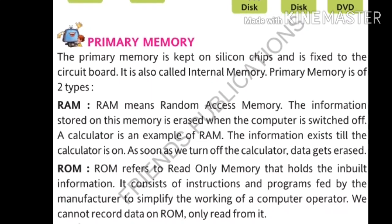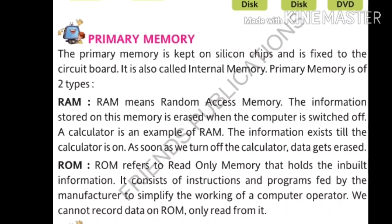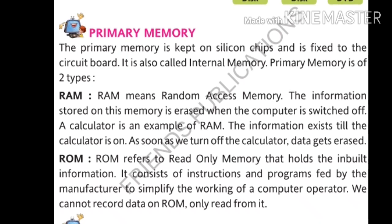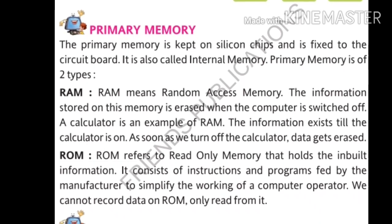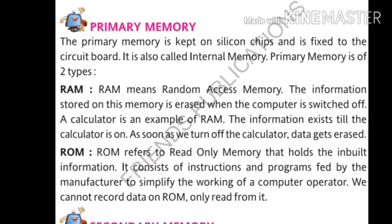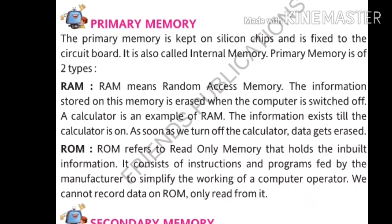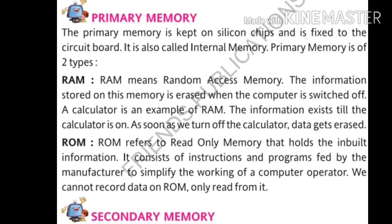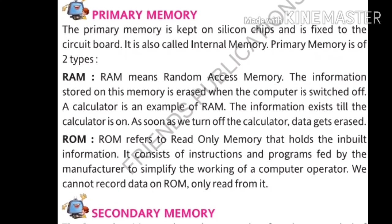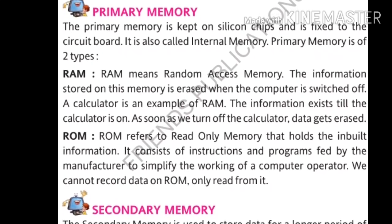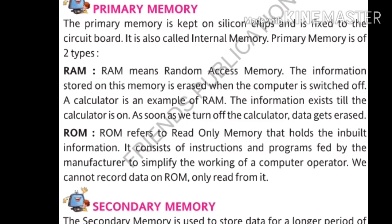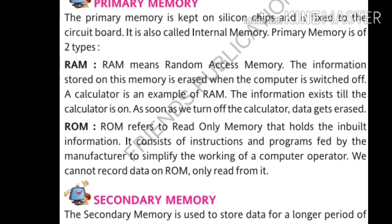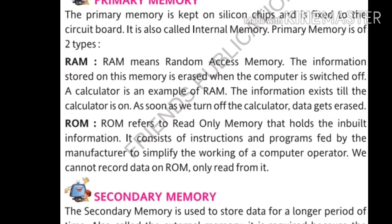Next is ROM — Read Only Memory. As the name suggests, you can only read this memory; you cannot write or add anything to it. ROM holds inbuilt information — meaning information previously built into the computer. It consists of instructions and programs fed by the manufacturer to simplify the working of the computer. We cannot record data on ROM; we can only read from it.